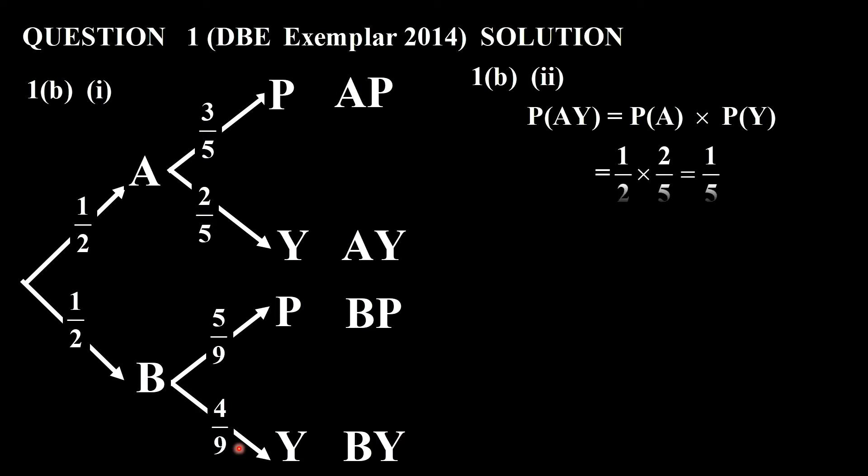Let's do the probability. We want to get the probability of from bag A to get a yellow. This is independent events. So it's the probability of A times the probability of getting Y. So you can see there you follow the branch. It's half times 2 over 5. So that half times 2 over 5 gives me 1 over 5.